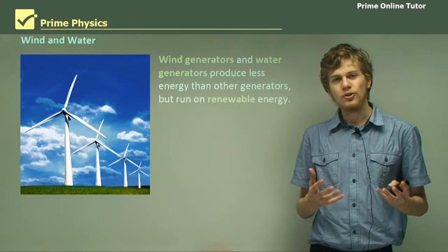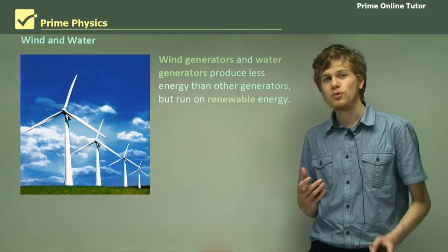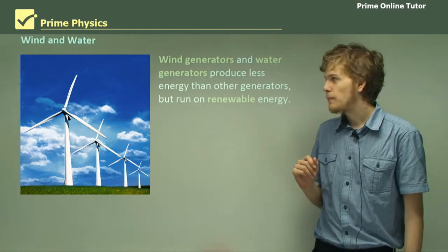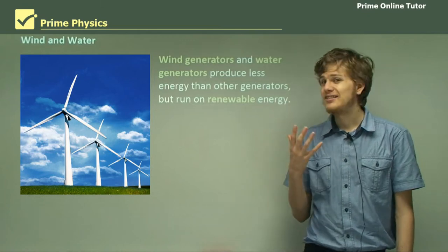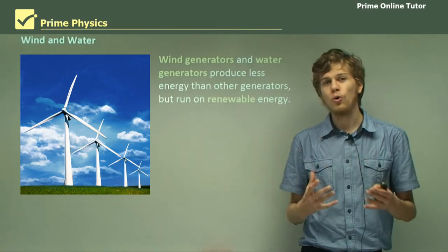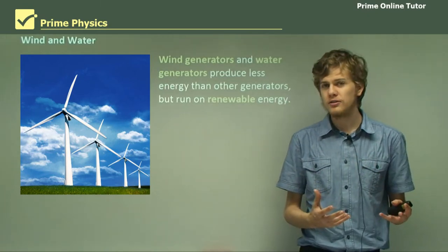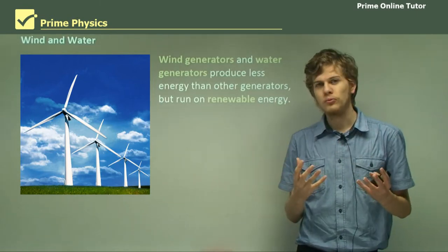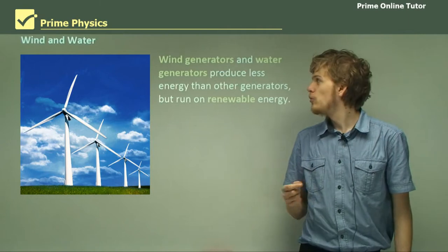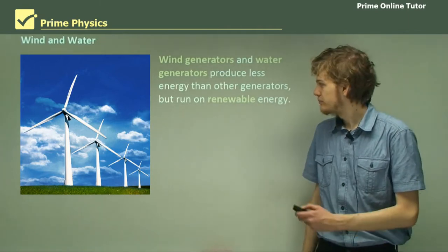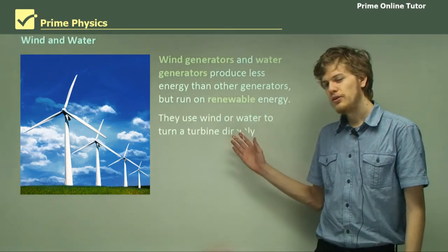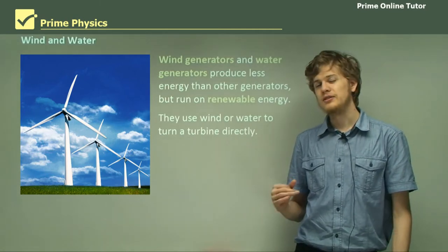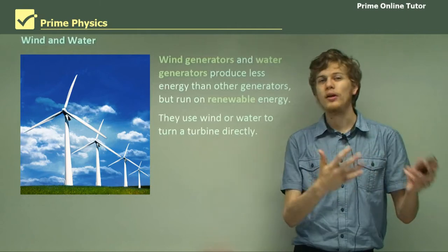Another alternative to producing electricity, if we're not going to use coal or uranium, is using wind generators or water generators. These will produce less energy than burning coal or using nuclear reactors, but they are renewable resources of energy — we won't run out of wind. These generators use wind or water to turn a turbine directly, instead of producing steam to turn the turbine.